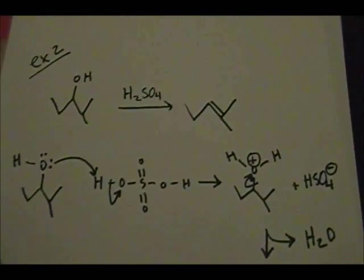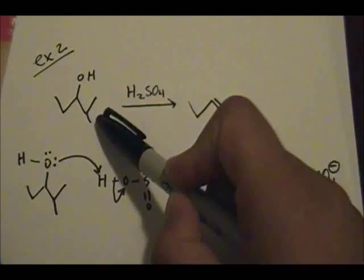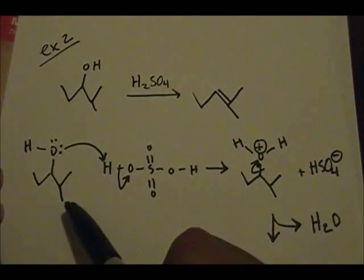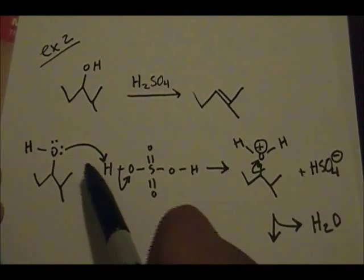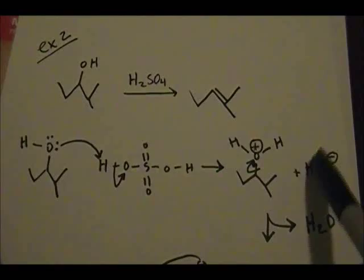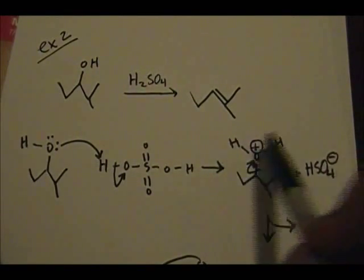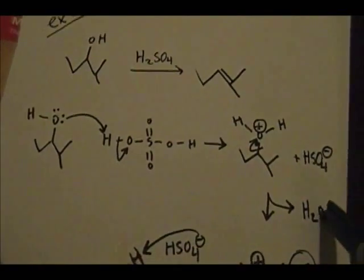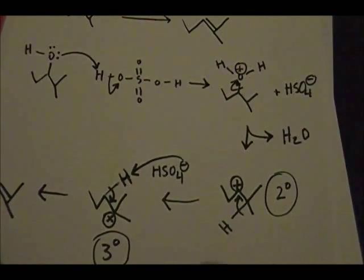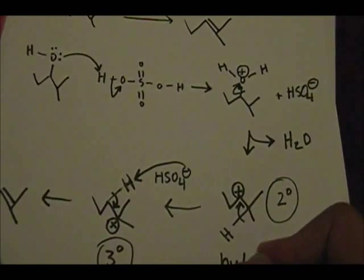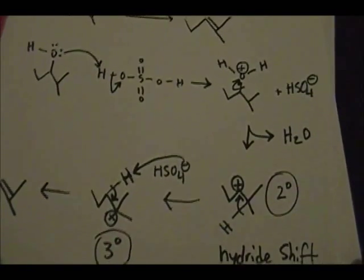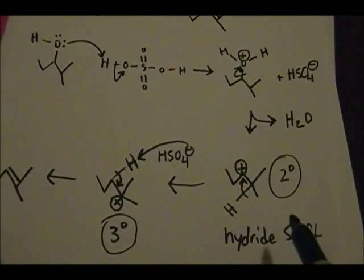Quick recap: secondary alcohol reacting with H₂SO₄ generates an alkene product. First step — oxygen off the alcohol plucks the H, generating HSO₄⁻, giving the intermediate with leaving group. Leaving group gets kicked off, you form H₂O and the secondary carbocation. Then you do a hydride shift — very important. You form a tertiary carbocation, then the elimination step: HSO₄⁻ picks up the H and you do the elimination to form the alkene product.